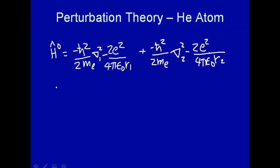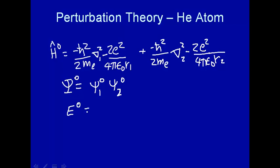We may recognize this as just the sum of two independent terms. The electrons don't interact, so it's as if the first electron doesn't really care about the second and vice versa. So we can write the wave function as the product of the wave function for the first electron, ψ1⁰, times the wave function for the second electron, ψ2⁰. And the total zero-order energy is just the energy of the first electron plus the energy of the second electron — wave functions multiply and energies add when you separate variables.